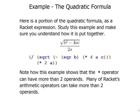One interesting thing to note here is that the multiplication operator in Racket can have more than two operands. Many of Racket's arithmetic operators can take more than two and it will find the product of everything or the sum of everything or whatever the operator is.